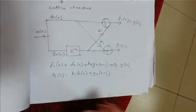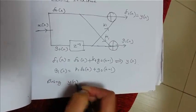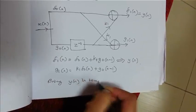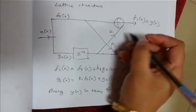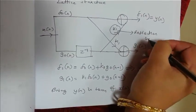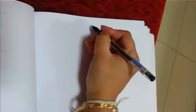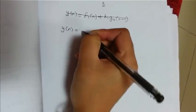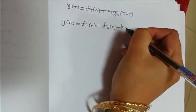This is nothing but Y of N for first order. So you have to bring Y of N in terms of X of N. What is the unknown here? K1. K1 is called as reflection coefficient for lattice form. So shall we rewrite the expression again. F1 of N is equal to F0 of N plus K1 G0 of N minus 1.